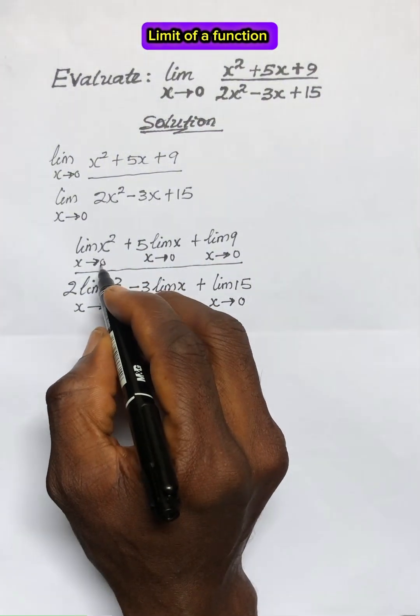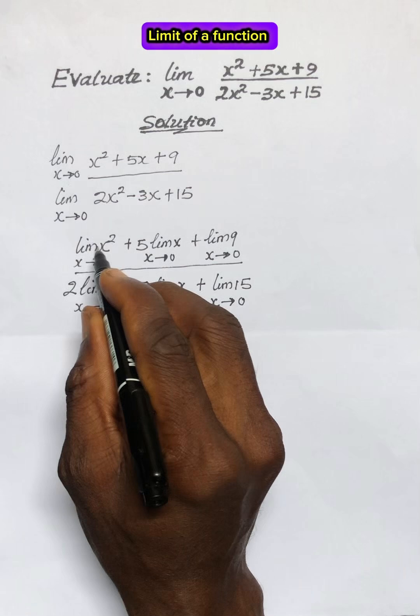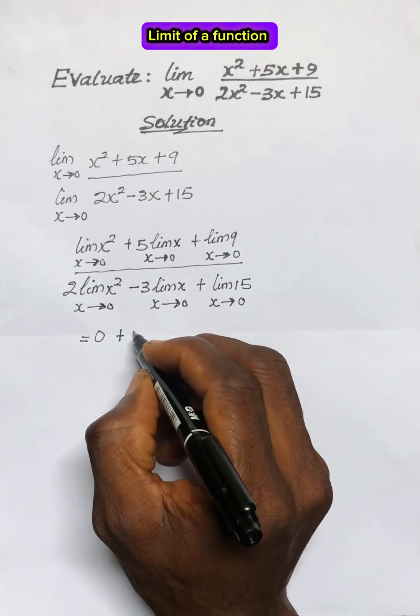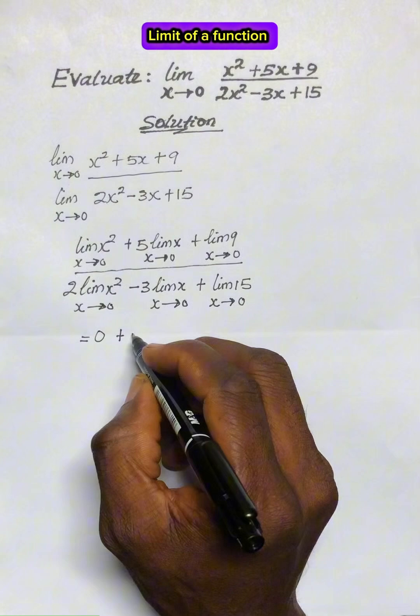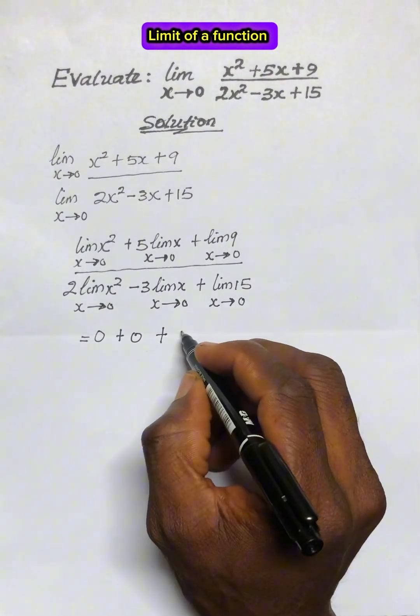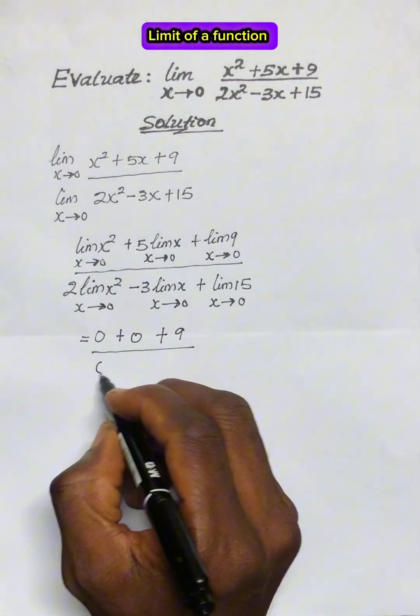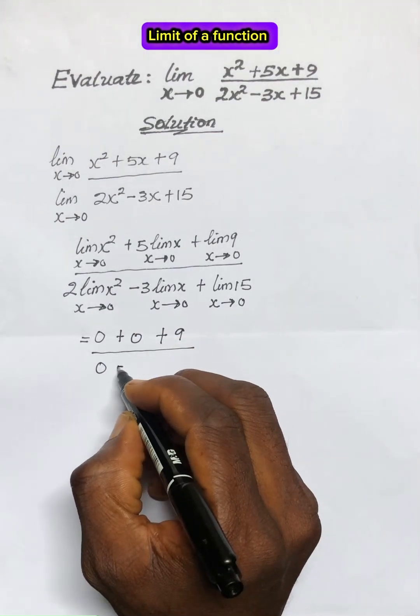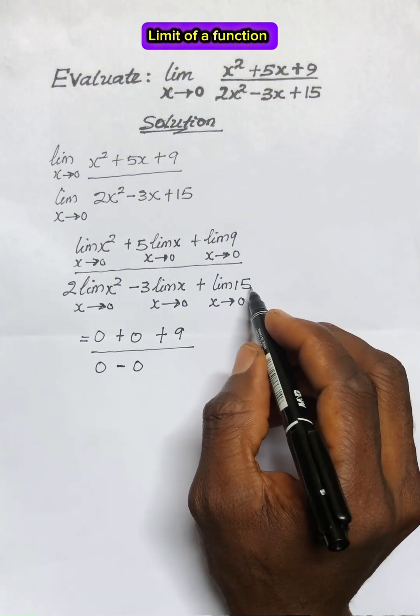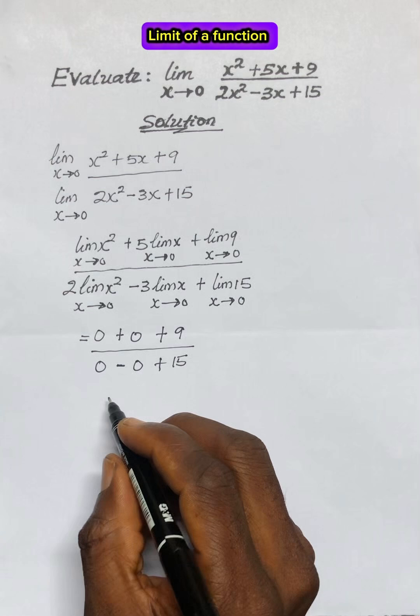Now wherever we see x, we're going to substitute 0. So we have: the numerator becomes 0 plus 5 times 0 is 0, plus 9 (because there's no x here, so it will remain 9), all over 2 times 0 is 0, minus 3 times 0 is 0, there is no x here, only 15 will remain, plus 15.